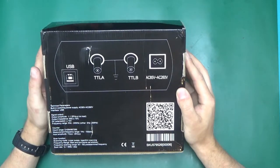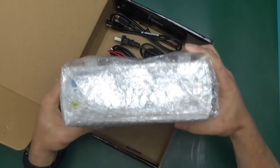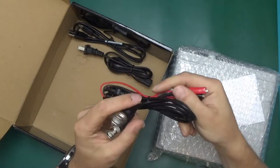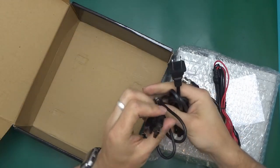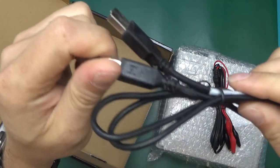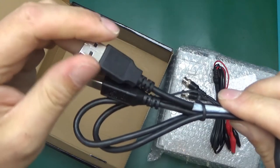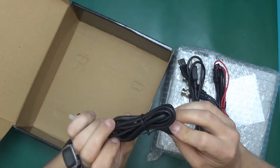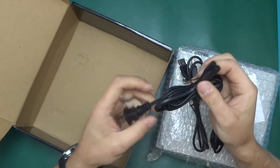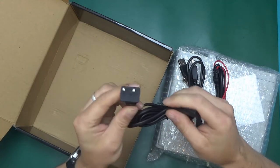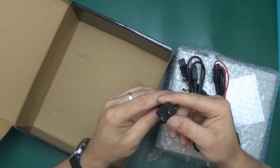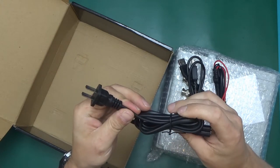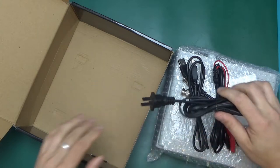What we have is the unit itself, two sets of BNC to crocodile clip cables, USB A to B which has got an HP logo on it, quality cable, and we've got a power cord. Figure-eight plug on one end and American style. 10 amp 250 volts rating is fine, the plug is just not right for where we are. Fear not, I came prepared. Here we have a proper UK plug.